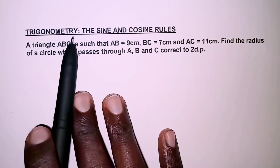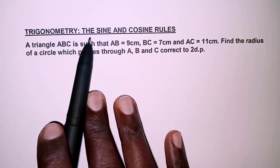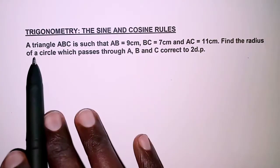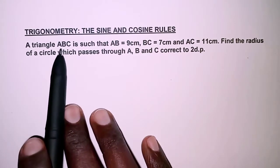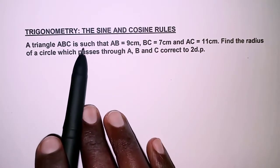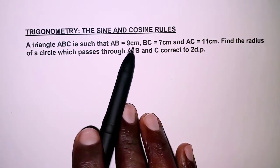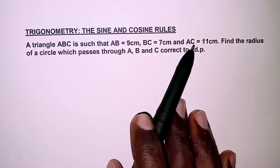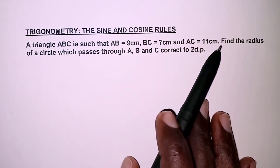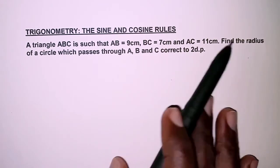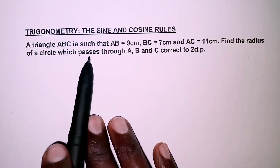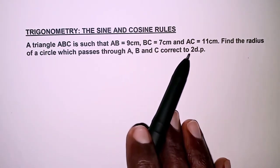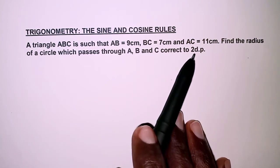The question today is on trigonometry and we look at the sine and cosine rules. The question reads: triangle ABC is such that AB is 9 centimeters, BC is 7 centimeters and AC is 11 centimeters. Find the radius of a circle which passes through A, B and C, correct to two decimal places.